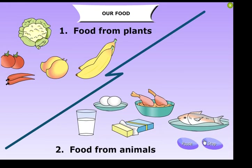We get food from plants and animals. Most of our food items such as vegetables, fruits, nuts, greens, and pulses come from plants. We get meat, milk, and eggs from animals.